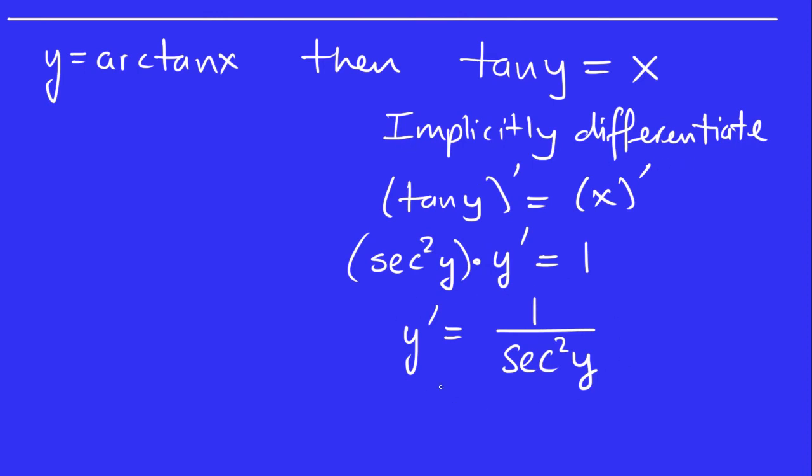Now comes the part where we have to remember an important trig identity. So recall the trig identity that tan squared x plus 1 equals secant squared x, right? But maybe instead of using the letter x, I should use the letter y. It really doesn't matter, but for this problem it's more suited. So I'm going to use that right now.